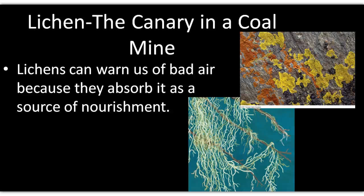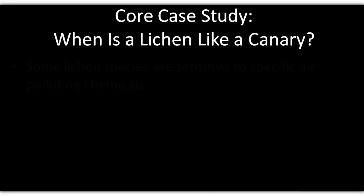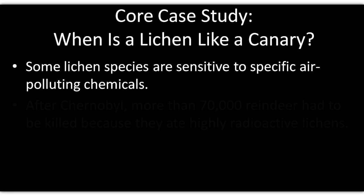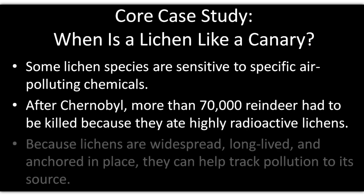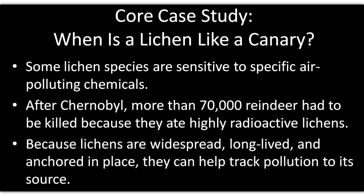One classic example is the Chernobyl accident in 1986. In Scandinavia, lichen are stationary, and reindeer were munching on contaminated lichen. When tested, the reindeer showed very high levels of radiation and had to be killed off. This illustrates how lichen can show what air pollutants are present in an area.